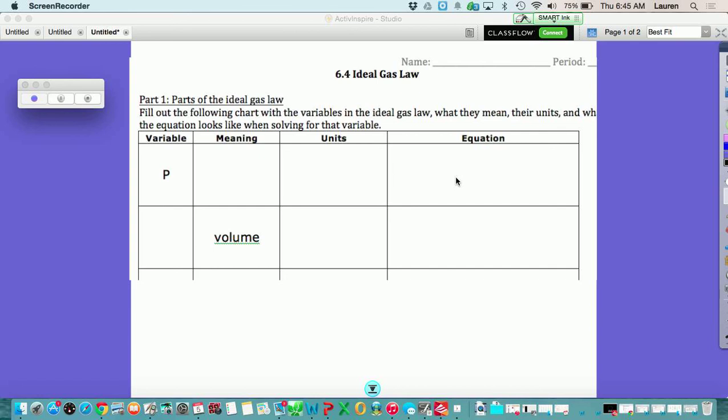Okay guys, so I'm going to go over how to do 6.4. Sorry I'm not here today, but hopefully this works. This whole worksheet is about PV equals nRT.